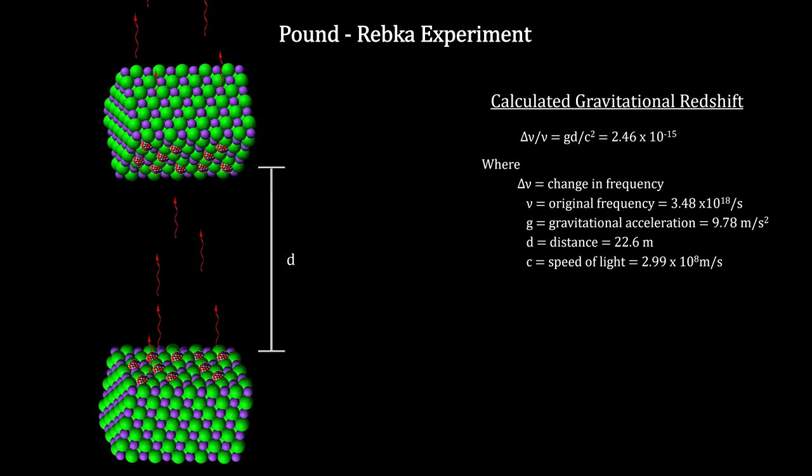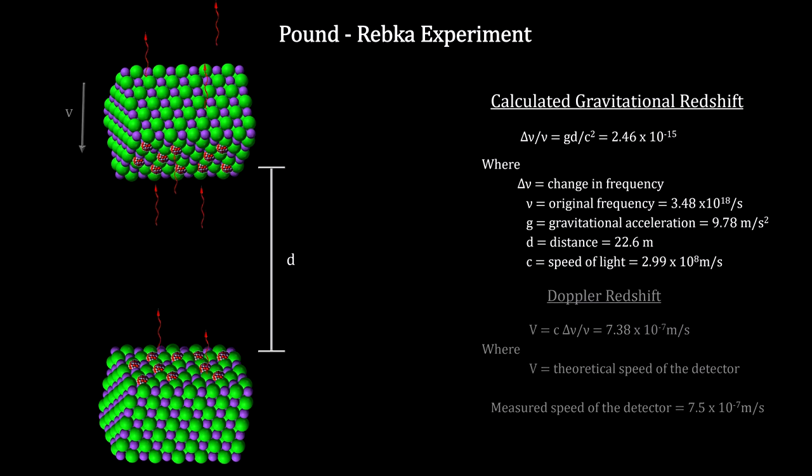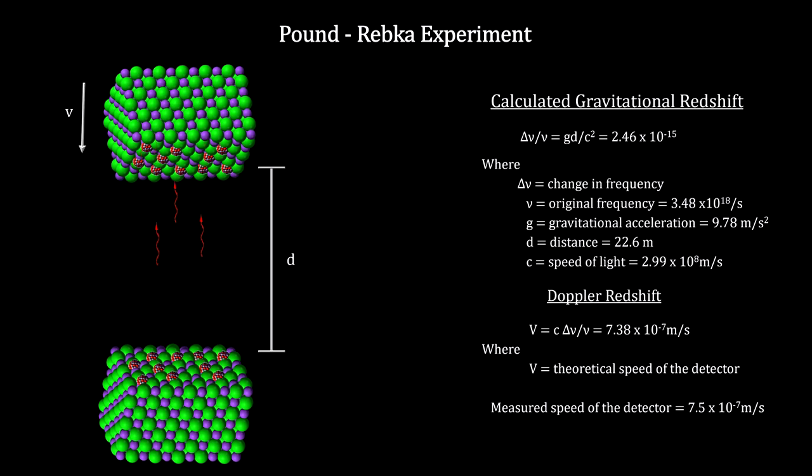The calculated shift was extremely small, but the Mossbauer effect is sensitive enough to measure it. They adjusted the detector's velocity down until absorption occurred.